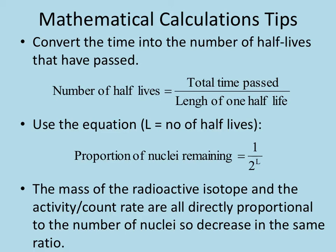We're now going to have a look at how you can do some calculations. When you want to do calculations using half-lives, usually the first thing you need to do is change the total time passed into the number of half-lives that have passed. You do this with the equation: the number of half-lives equals the total time passed divided by the length of one half-life.